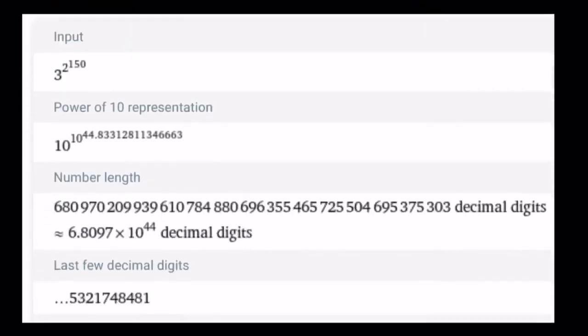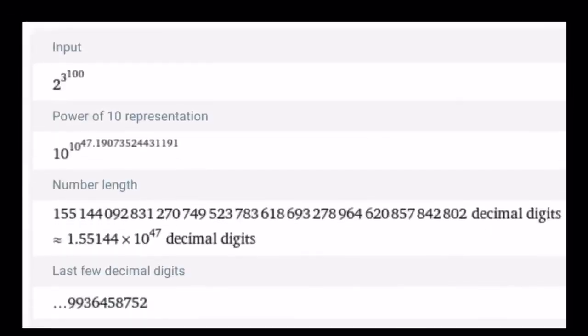Let's take a look at some numerical values. And you'll be amazed, I think. First, 3 to the power 2 to the power 150, the smaller number. This number has 6.8 times 10 to the power 44 decimal digits. It has this many digits. I'm not saying this is the number. It has this many digits. Very, very, very large number. Let's compare it to the other number, which is also super-duper large. This is the larger number. 2 to the power 3 to the power 100 wins. And it has 1.55 times 10 to the power 47 decimal digits.